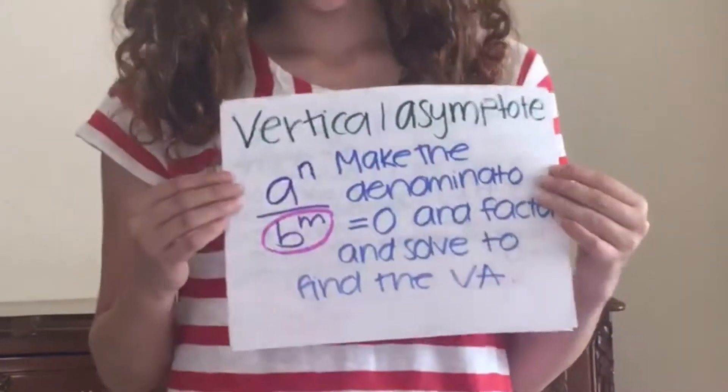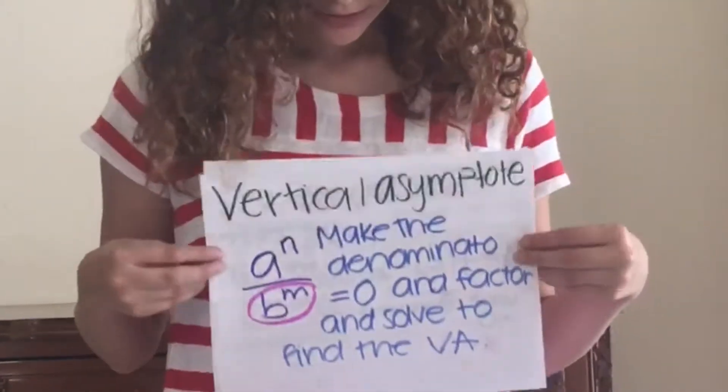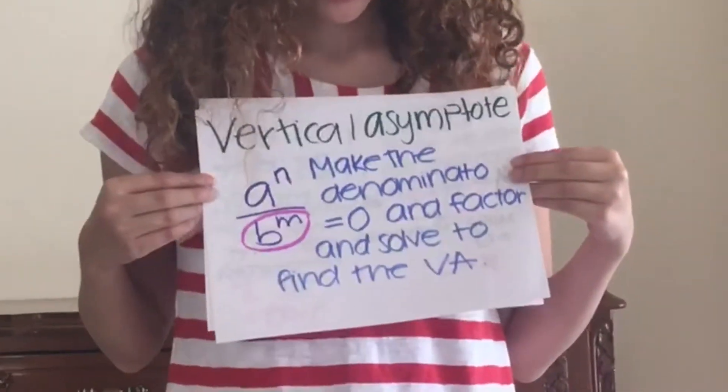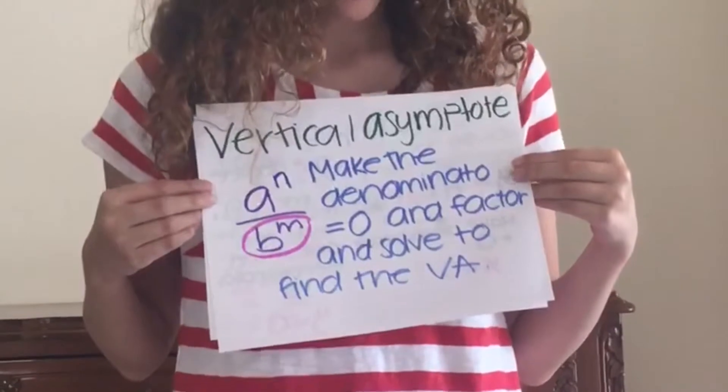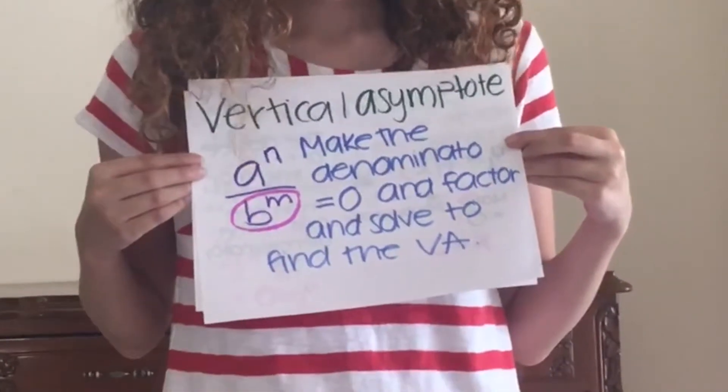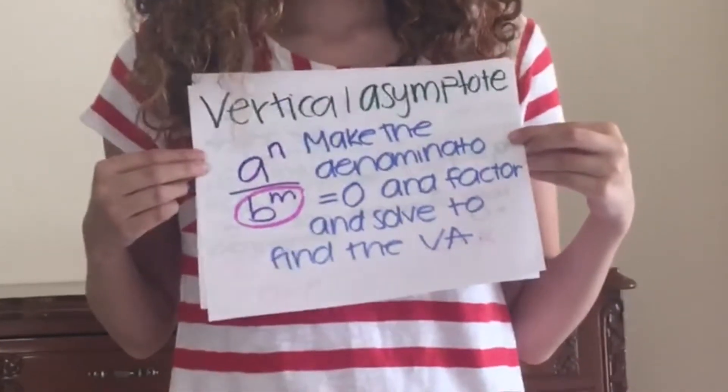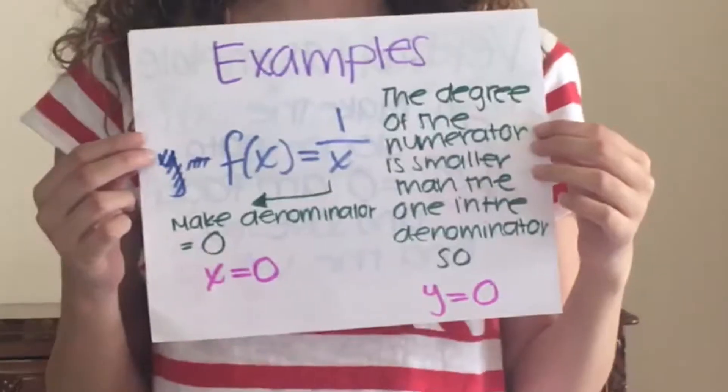Vertical asymptote: we need to make the denominator equal to zero, then factor and solve to get the vertical asymptote.